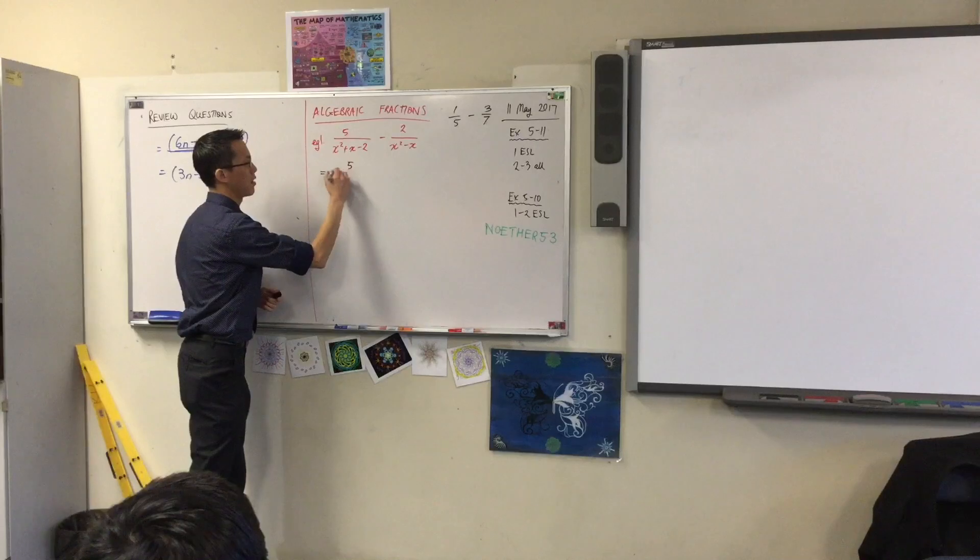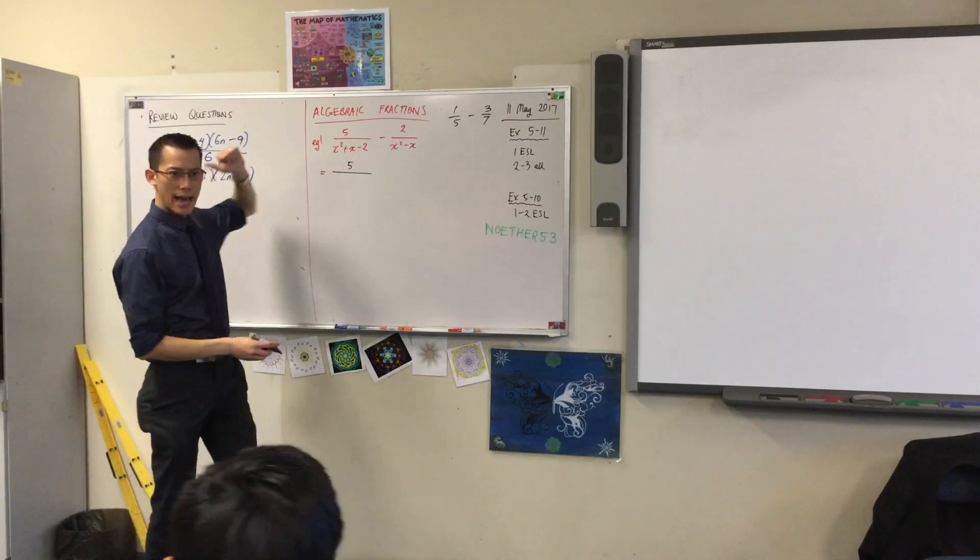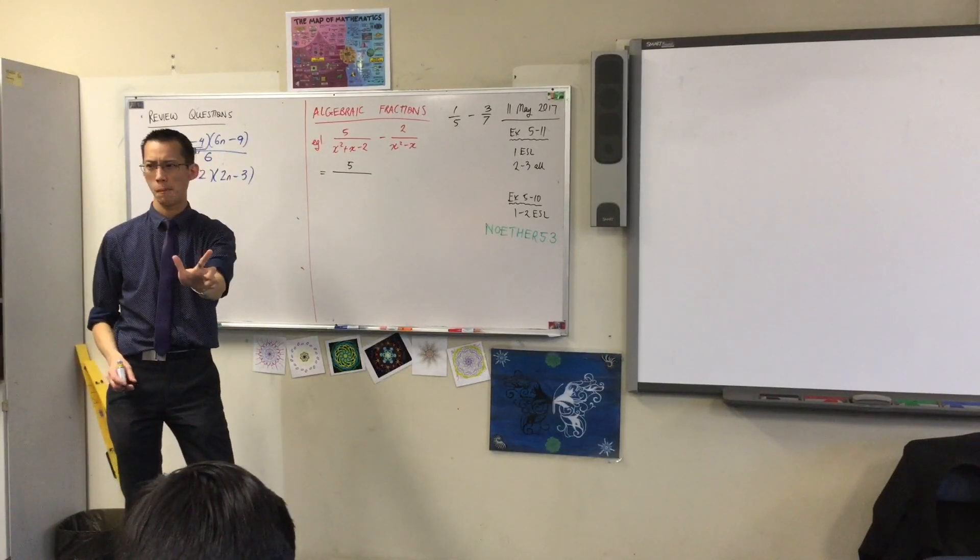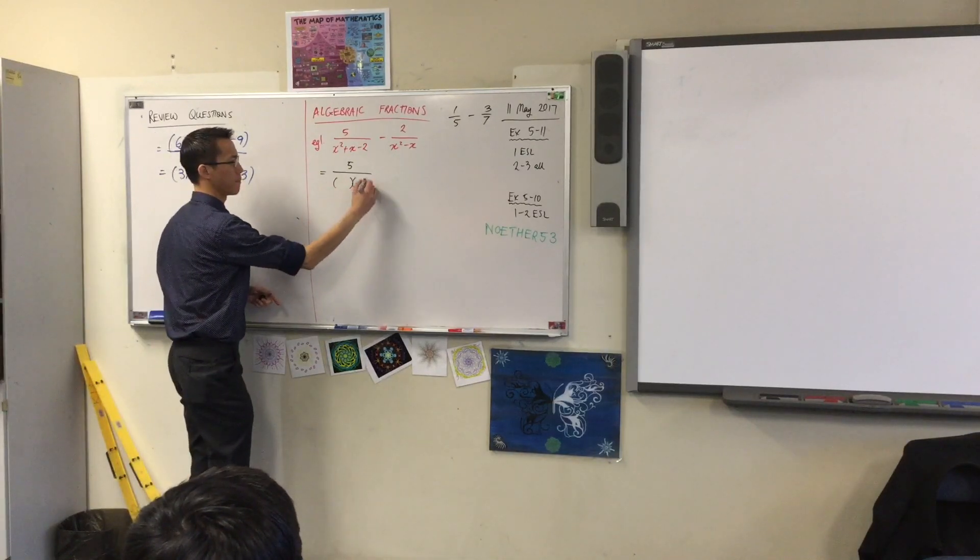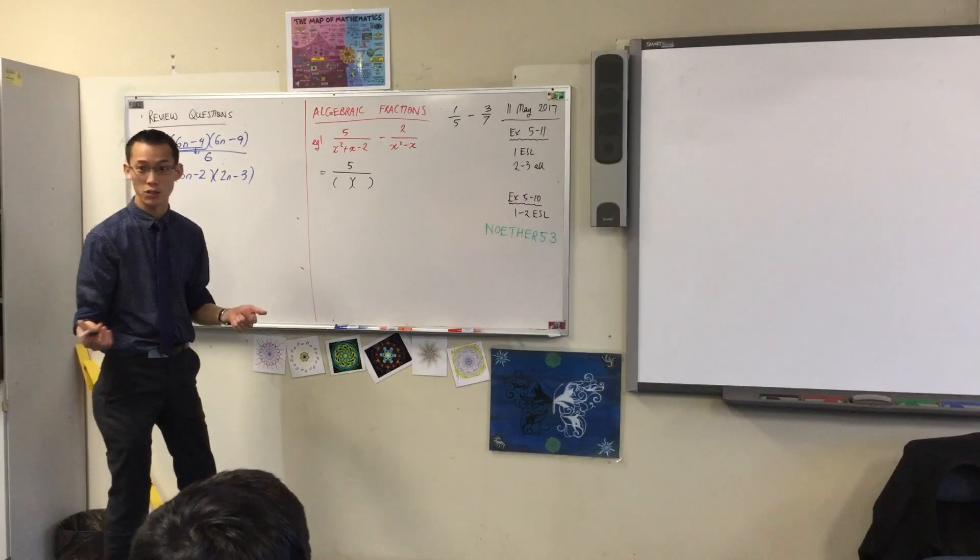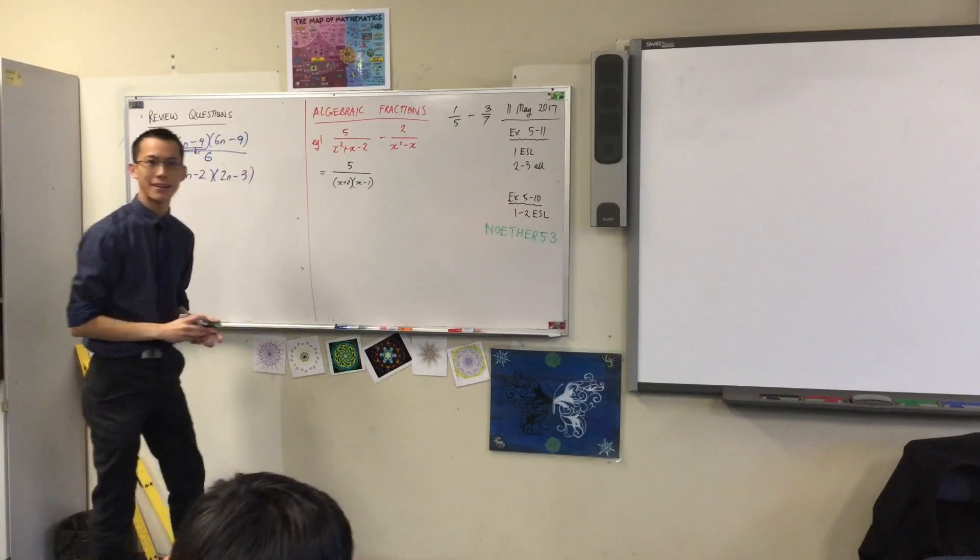So, let's look at the first one. x squared plus x minus 2, I want the numbers to add to 1, multiply to negative 2. What are the numbers? 2 and negative 1. They'll do the job, right? So, I'm going to write x plus 2, x take away 1, okay?